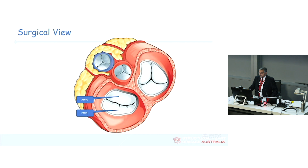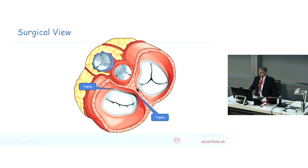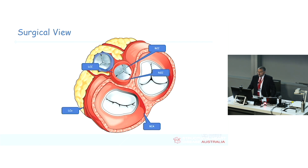Looking from above, the aortic valve is anterior to the mitral valve. The two key landmarks to keep in mind with all imaging are the atrial septum and the left atrial appendage — that will tell you where you are when looking at the leaflets. The aortic valve has three leaflets. The non-coronary cusp is always near the atrial septum, the right coronary cusp is the most anterior, and the left coronary cusp is next to the left atrial appendage.